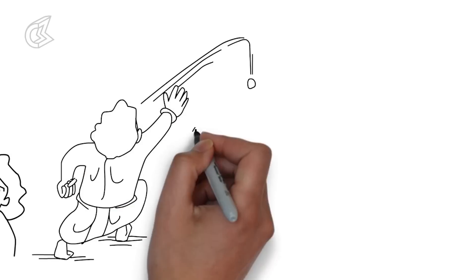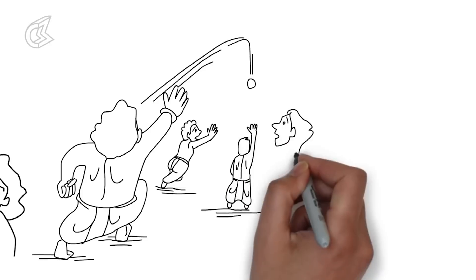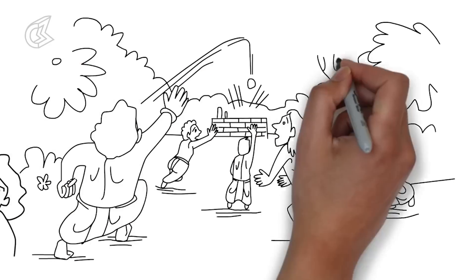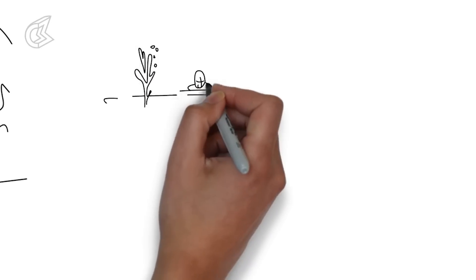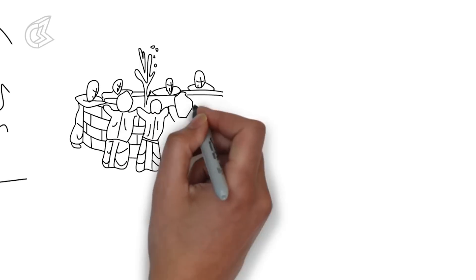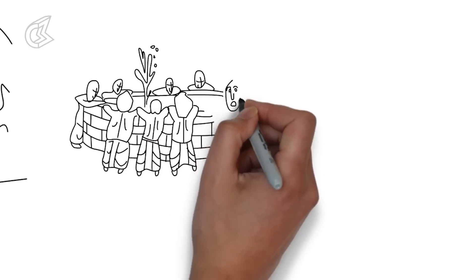One day, when the princes of Hastinapur were playing outdoors, Bhim underestimated his own strength and threw the ball too high and it landed in a deep well. As they looked down the well with despair, Arjun spied a Brahman coming towards them. Something about the poor man struck Arjun as being singular and powerful.